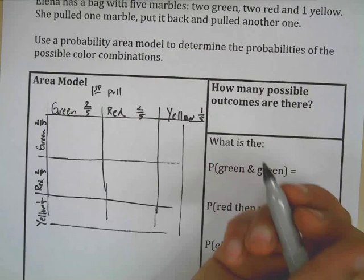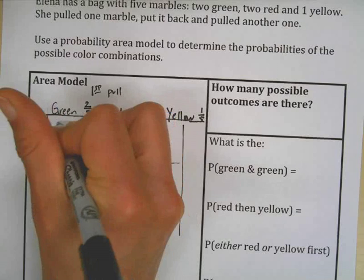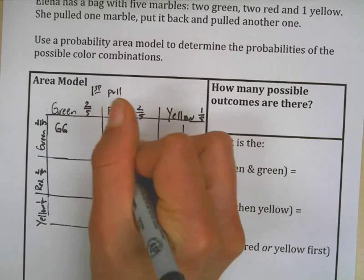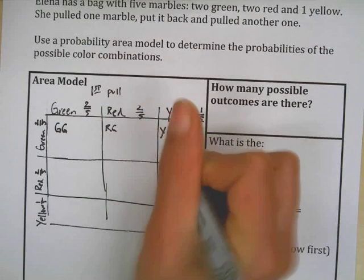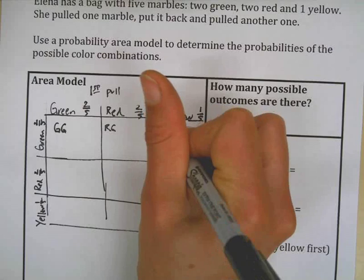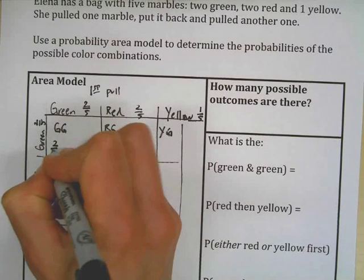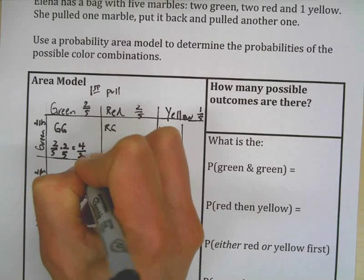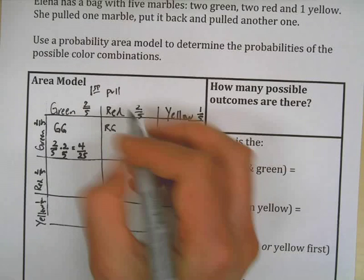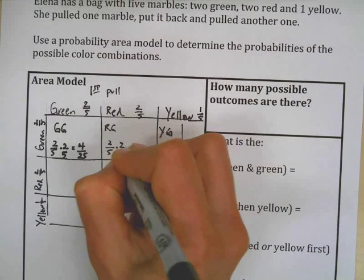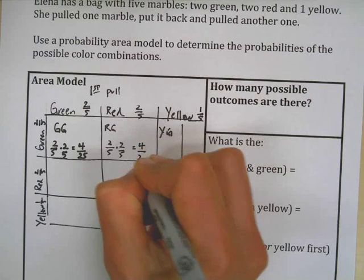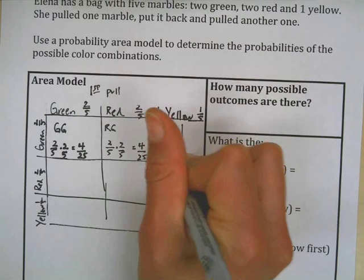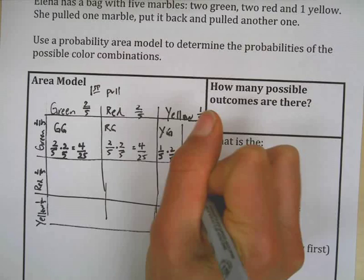Now, what you're going to do is find out what are the different things that are happening. Well, if this happened, pulling a green first and then pulling another green. Or you could pull a red first, then a green. Yellow first, then a green. And then what are the probabilities of these things? This was two-fifths for the first and two-fifths for the second, so this would be four twenty-fifths probability. This one, the same thing, two-fifths times two-fifths equals four twenty-fifths. And here we have yellow one-fifth probability times green two-fifths equals two twenty-fifths.